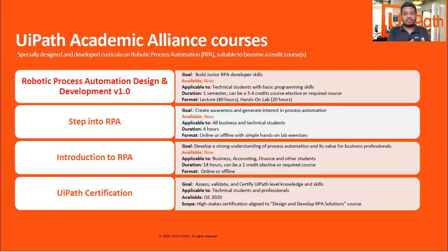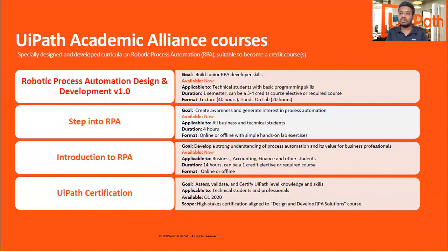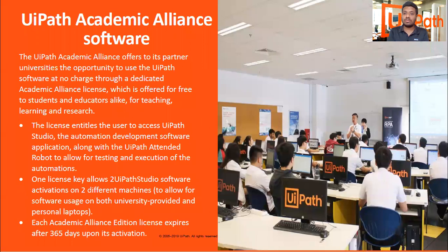The first course, Robotic Process Automation Design and Development, targets technical students with some basic programming skills and has about 40 hours of lectures and 20 hours of hands-on lab sessions. The Step into RPA course is focused on all business and technical students, offered online and offline with simple hands-on lab sessions similar to what you see in UiPath Academy. Introduction to RPA mainly focuses on students in business, accounting, finance, and other domains. All these courses are offered to universities for free, along with the academic version of the enterprise license so students can do hands-on work and get familiarized with UiPath.